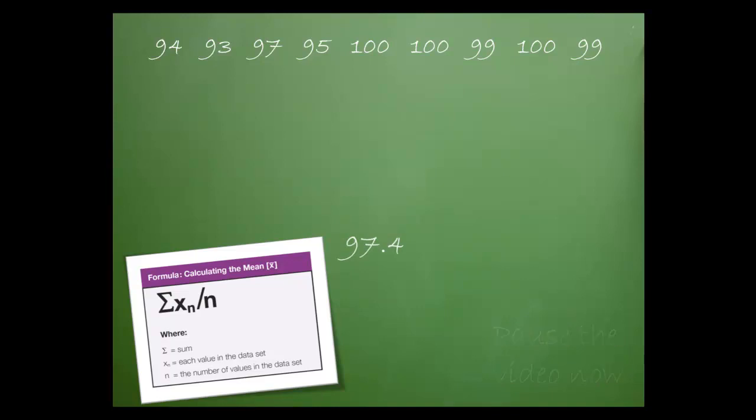The mean is 97.4. Here's how I got that figure. First, I added all the values in the data set. The sum was 877. I then divided by the number of values in the data set, which was 9. Therefore, the mean was 97.4.